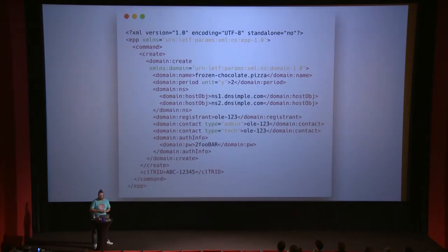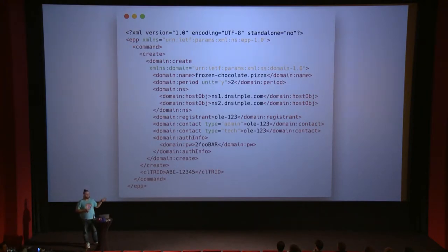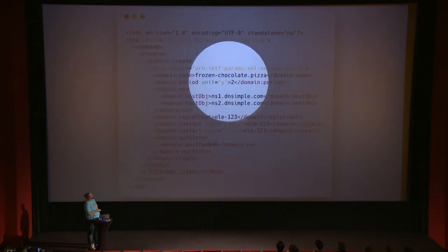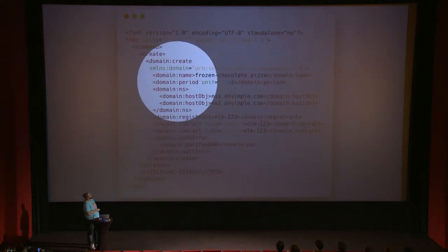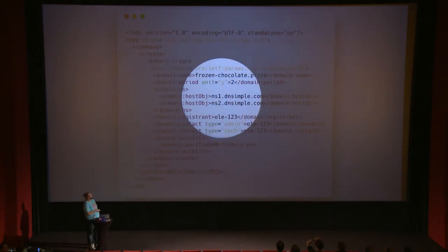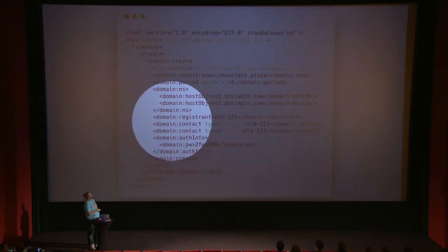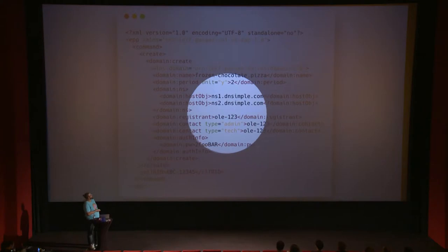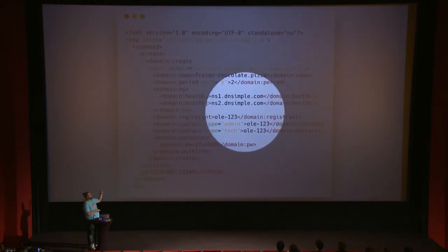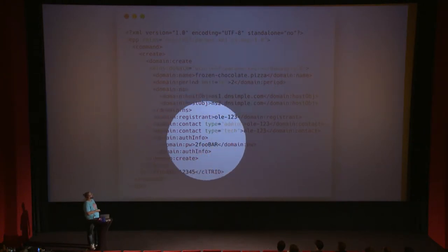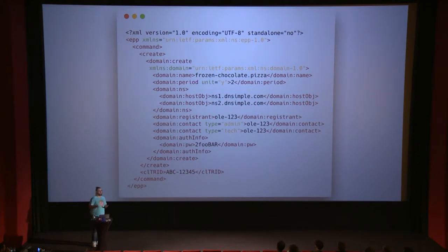Here's an example EPP request — one that probably wouldn't work because it doesn't include extensions — to register frozen-chocolate.pizza. You can see the domain name specified, the domain period we want to register, the name servers we want to set, and a hint that a host in EPP is usually linked to name servers. You also see the registrant, the different contacts with their various types, and the domain auth info — the auth code used when transferring a domain. Auth codes are set and can be altered by your registrar. And yes, it's all plain text.